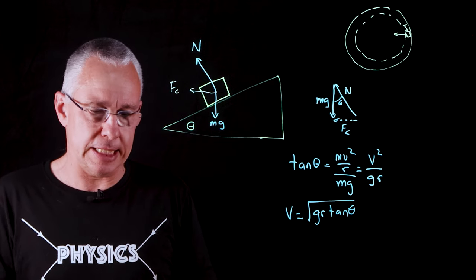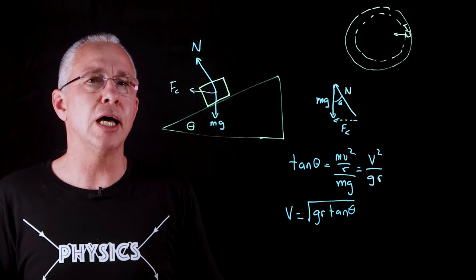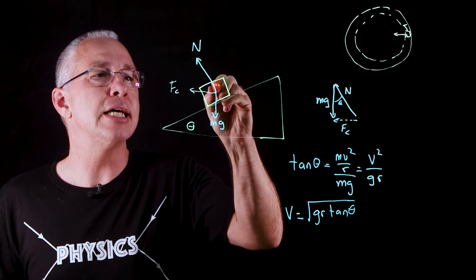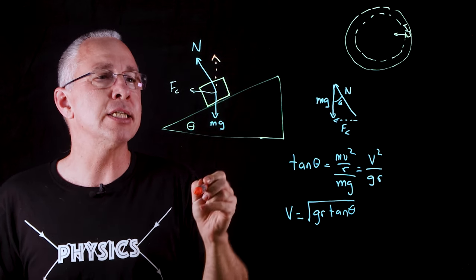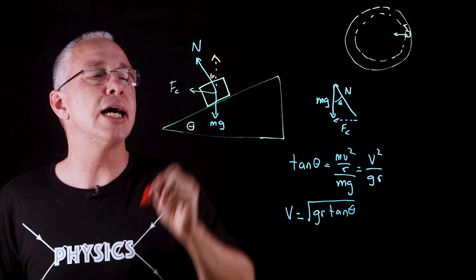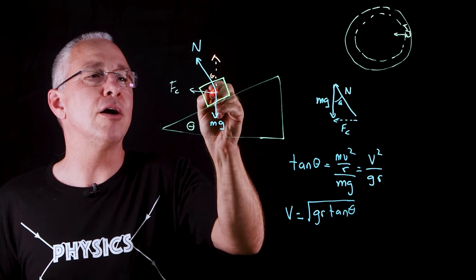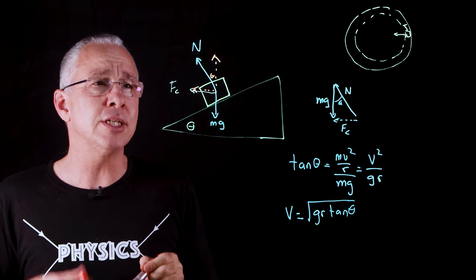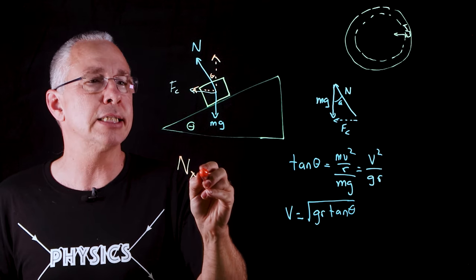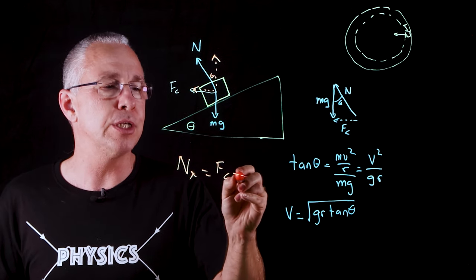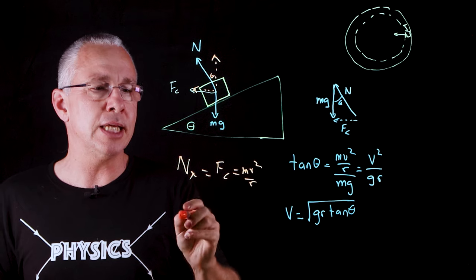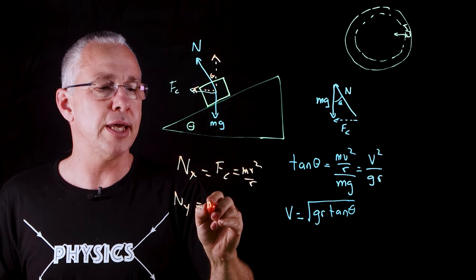But I want to quickly touch base also on a component way of doing this. You can see that the normal has two components, it has a vertical component. If this angle right here is the value of theta then this becomes theta as well, and then of course we have our horizontal component. You can see straight away that the normal's horizontal component, let's call this Nx, happens to be the centripetal force which we know is mv² over r. What about the vertical? Well in that case my vertical component is equal to mg because we have a net force of zero.